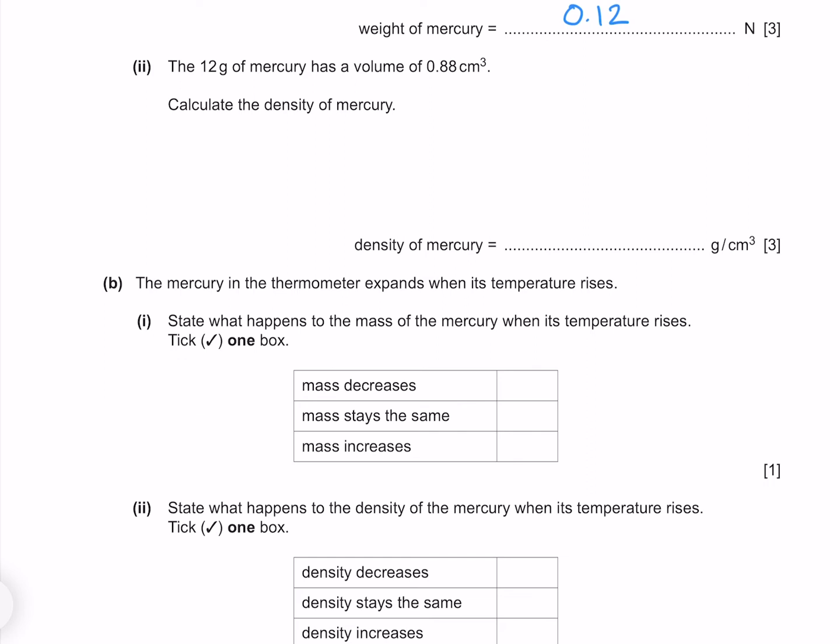The 12 grams of mercury has a volume of 0.88 centimetre cube. Calculate the density of mercury. The equation for density is mass per volume. The questioner is wanting an answer in grams per centimetre cube, so we'll leave our mass as 12 grams, which gives me 13.6 grams per centimetre cube or 14 to 2 significant figures.